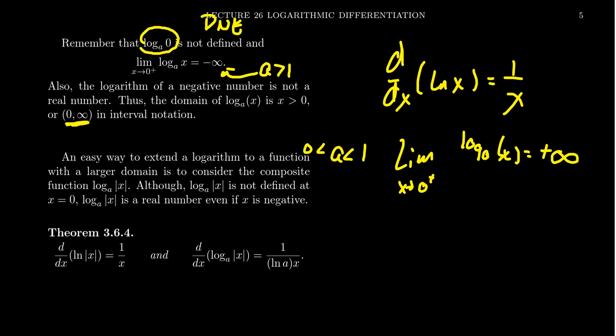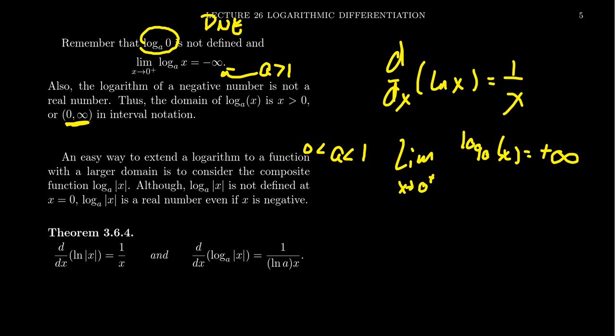But what about negative numbers? Can we talk about the natural log of negative one or something like that? Well, it does technically lead towards some imaginary numbers. For example, the natural log of negative one is equal to pi times i. It's kind of like the same issue — when you take the square root of a negative, you're going to end up with imaginary numbers. The same thing happens with logarithms of negatives.